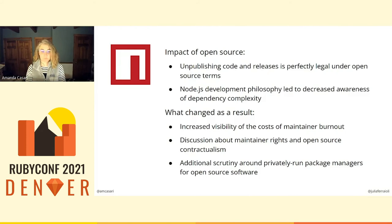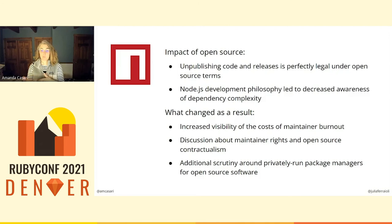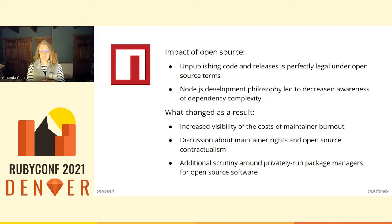What changed as a result? Since 2016, there has been increased visibility to the cost of maintainer burnout — you'd think we would have learned this back in 2014 when we saw criticalities happen with one maintainer on a critical project. We have started to look at this not just from a monetary perspective but also in terms of the economics of different package management systems, and what it means for somebody to simply decide they're done. There's increased discussion about maintainer rights and open source contractualism, additional scrutiny around privately run package managers for open source software, and a lot more discussion around the economics of open source, the ways we depend on critical infrastructure, and what is critical infrastructure.